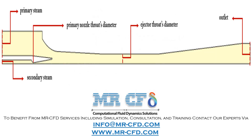We designed the present two-dimensional model using Design Modeler software. Due to the symmetrical structure of the nozzle and the ejector diffuser, we designed only half of the ejector. The desired geometry consists of two inlet sections for the flows related to the actuator and the secondary flow, and an outlet for the mixed output fluid and the nozzle wall.